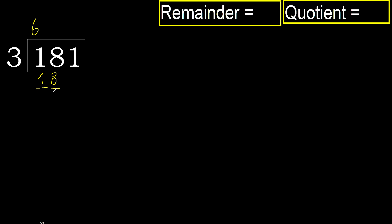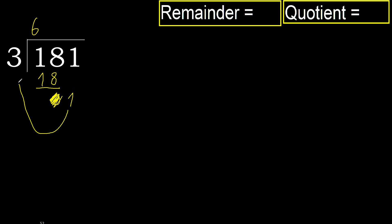18 minus 18 is 0. Next, eliminate 0 on this side — bring down 1. But 1 is less, therefore next.